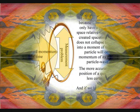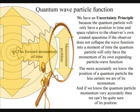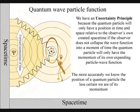In quantum physics we have a problem. It's called the measurement problem. Put very simply, the more accurately we know the position of a quantum particle, the less certain we are of its momentum. And if we know its momentum very accurately, then we can't be quite sure of its position.